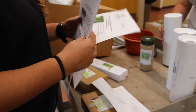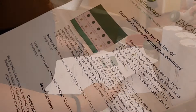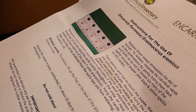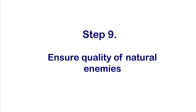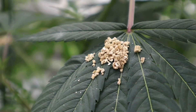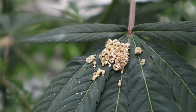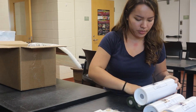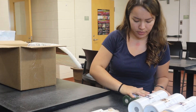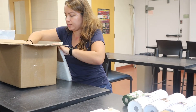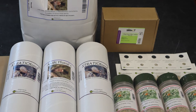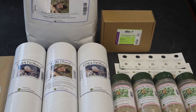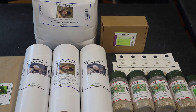Your suppliers want you to succeed, so they should be able to provide you with technical information and advice. Natural enemies are living organisms that must be handled and stored carefully to maximize survival and sustain their viability. In general, shipments of natural enemies should be received within 4 days after placing an order.